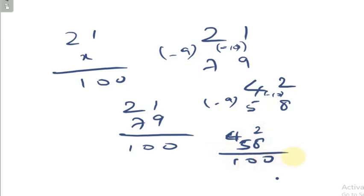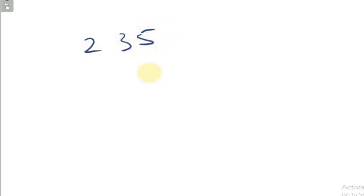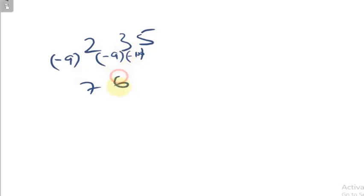I think you would have understood this concept of complementary number by now. We will see the complementary number for a 3-digit number. Take 235. Subtract the first two digits from 9: 9 minus 2 is 7, 9 minus 3 is 6. Subtract the last digit from 10: 10 minus 5 is 5. So the complement of 235 is 765.